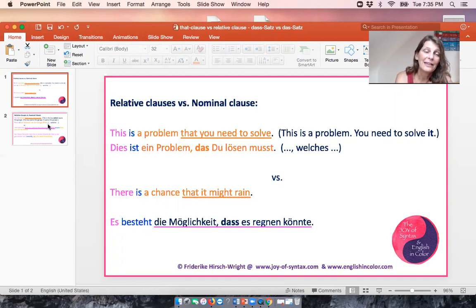Okay, so here is another example on the next slide, and I wanted to give you a relative clause in which the relative pronoun is the subject of the relative clause. This is the key that opens the garage. That here is the relative pronoun replacing key. So we could say this is a key, it opens the garage. This key opens the garage. So we see that the relative pronoun that functions as subject of the relative clause. Again we have a restrictive relative clause.